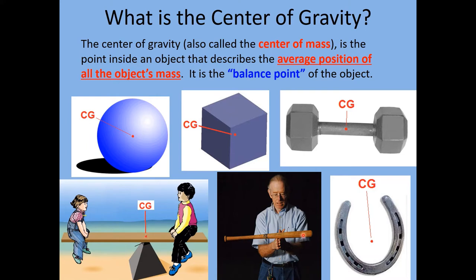For something like a bat, which has a non-uniform distribution of mass — more mass on the thicker right side compared to the thinner left side — the CG, or balance point, is shifted over to the right; it's not halfway across. Interestingly, the center of gravity doesn't actually have to be inside the material of the object. If we take a horseshoe, the CG point is actually floating out here in space, representing the average position of all the mass of the horseshoe.